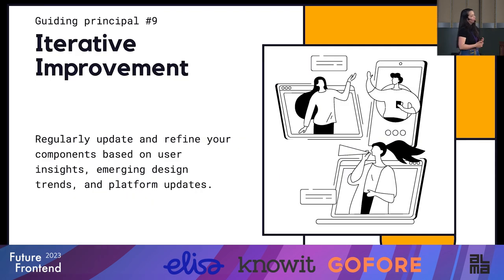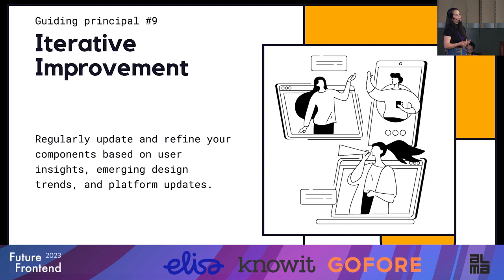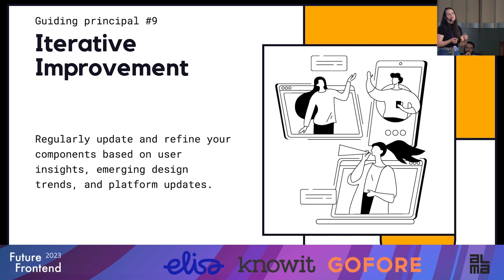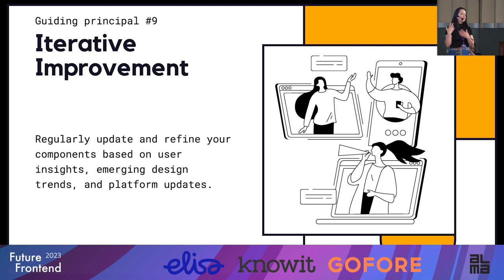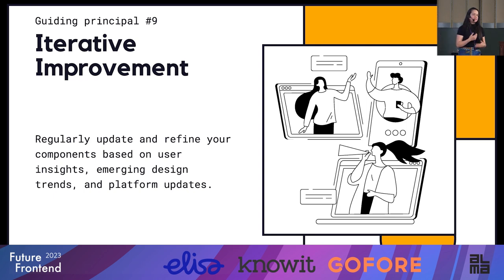And finally, principle nine: iterative improvement. Regularly update and refine your components based on user insights, emerging design trends, and platform updates. The segmented control is an example for iOS — maybe in a couple of versions down the line that's no longer a common pattern, or they change the style slightly. Does it still fit your brand and your application? You'll have to get that information updated in your design libraries. A design system is not static — it needs to keep going.